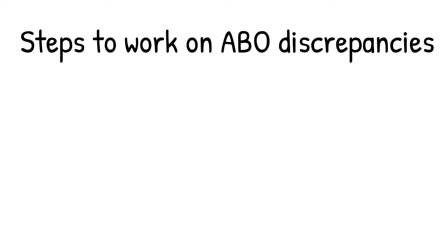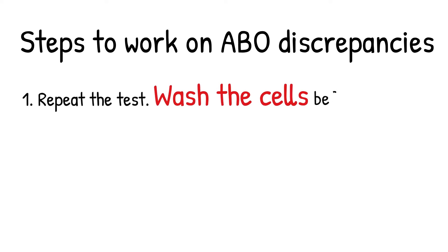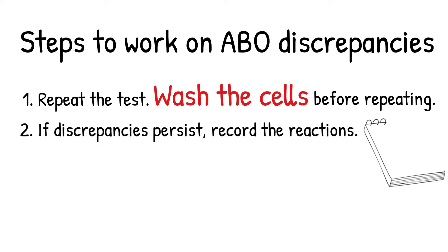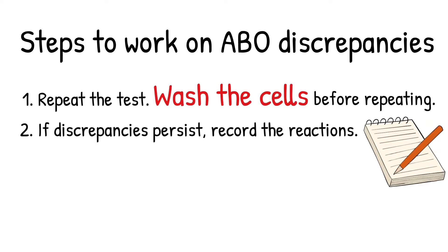Here are some steps to work on ABO discrepancy problems. First, repeat the forward and reverse type. Do not forget to wash the cells before repeating the forward typing. If the discrepancy goes away, you can report the results. Second, if the discrepancy persists, record the reactions — whatever you got — and continue to the next step.